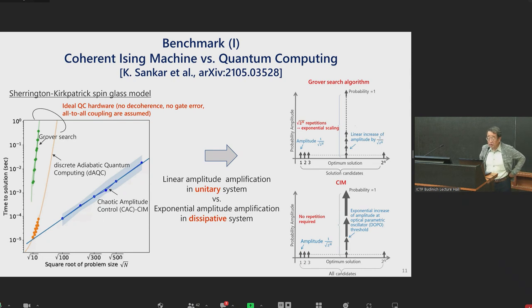Let me show you a few benchmark results here. The first one is coherent Ising machine versus quantum computing. We actually picked up Sherrington Kirkpatrick all-to-all coupling spin glass model. The left panel shows the time to solution to ground state versus problem size, square root of problem size. Two quantum computing models assume ideal hardware, namely no decoherence, no gate error. Therefore, there is no quantum error correction needed. And also, all-to-all qubit coupling is somehow realized. Even such ideal quantum computing hardware, Grover search and discrete adiabatic computing search actually feature exponential scaling.